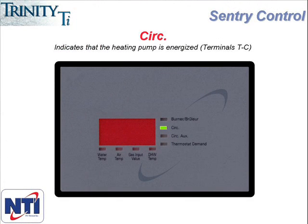The next indicator light we are looking at is CIRC, or circulator. This represents the primary circulator, or the primary pump, sometimes referred to as the boiler pump. Whenever the boiler receives a call for heat, the first thing it does is energize the primary pump by sending 120 volts to the blue wire in the connection box at the top of the boiler. This blue wire should be connected to the primary pump. When the circulator indicator light is on, you know the blue wire is being energized, therefore the primary pump should be running.